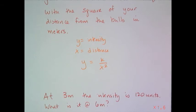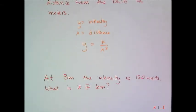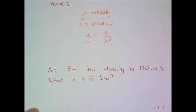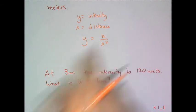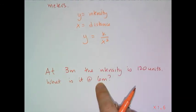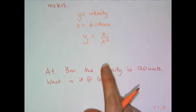Let's say at three meters, the intensity is 120 units. What is it at six meters? It's not half of it or anything like that. It's actually a little bit different because it's x squared. If I want to know the answer, I have to find out the k value for this particular bulb setup.